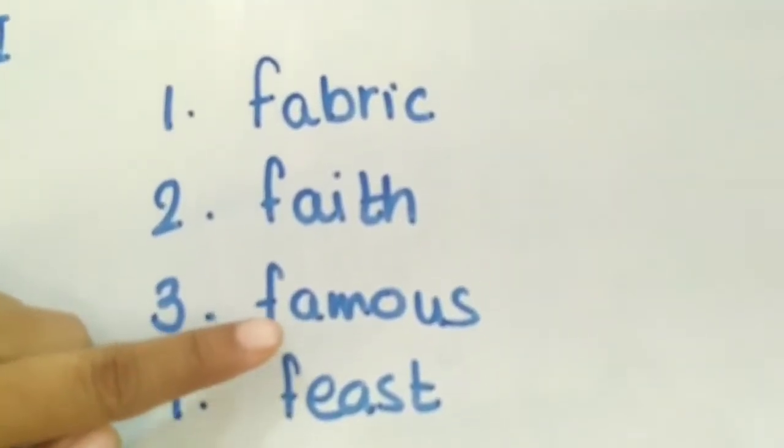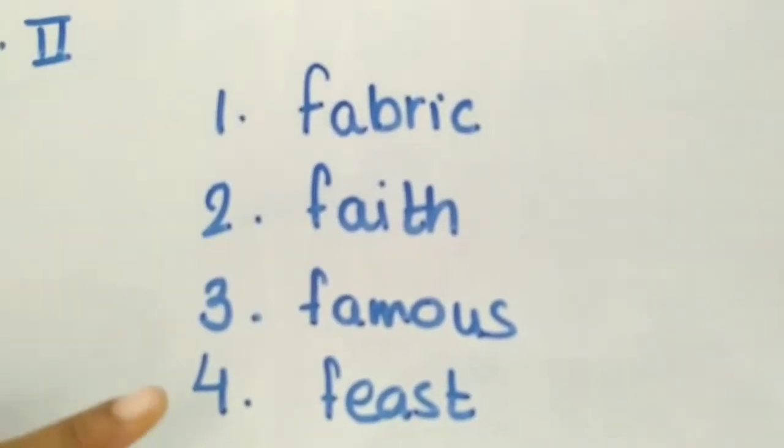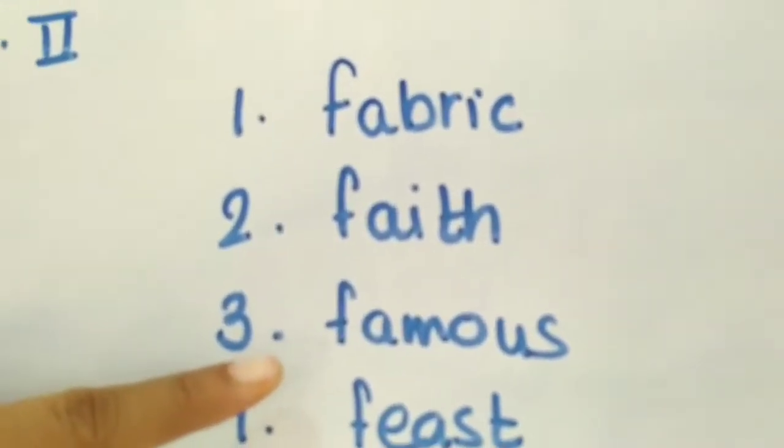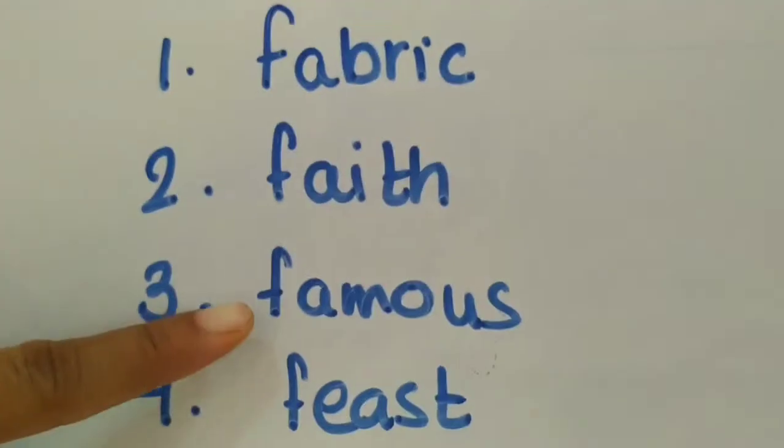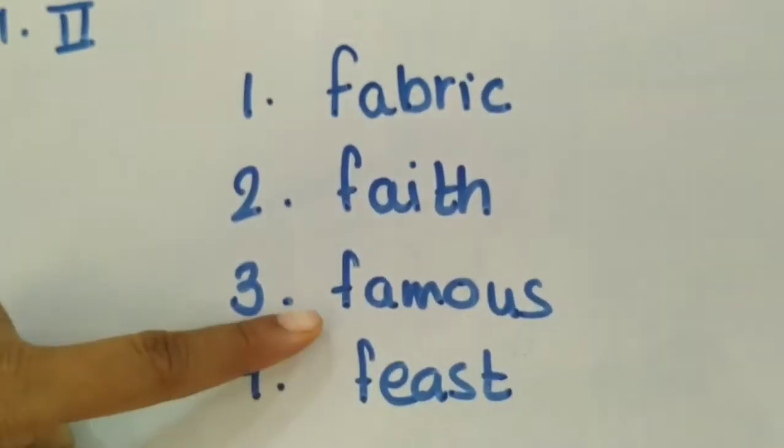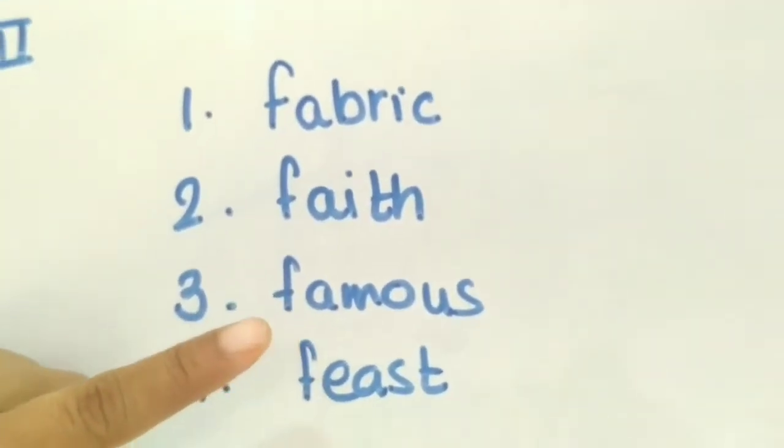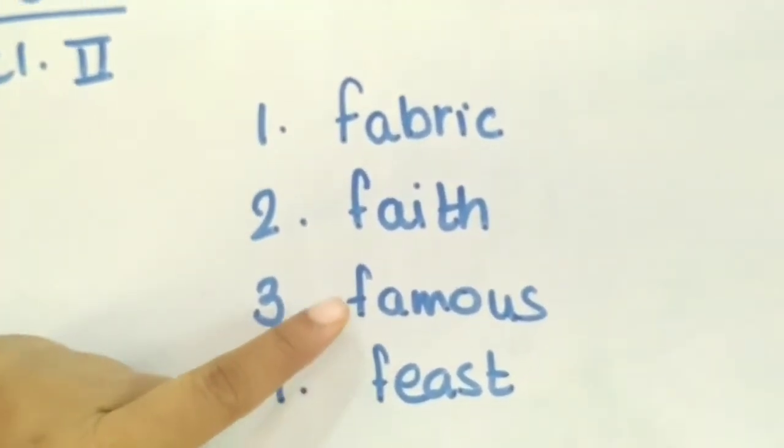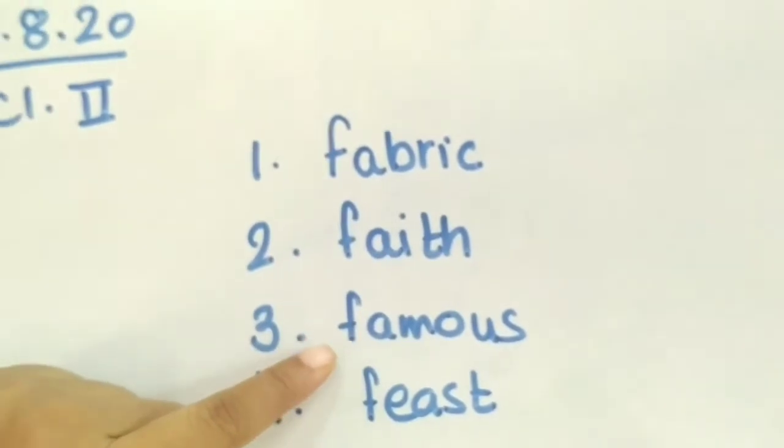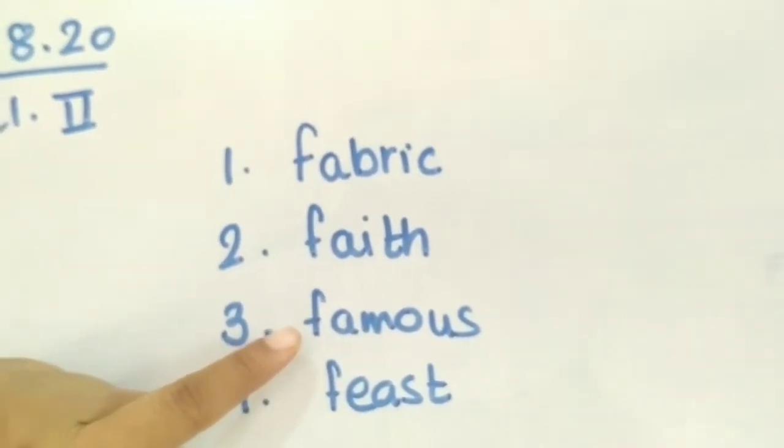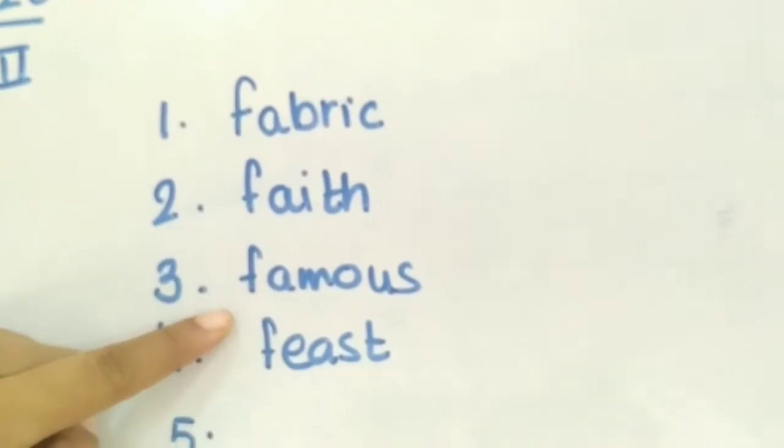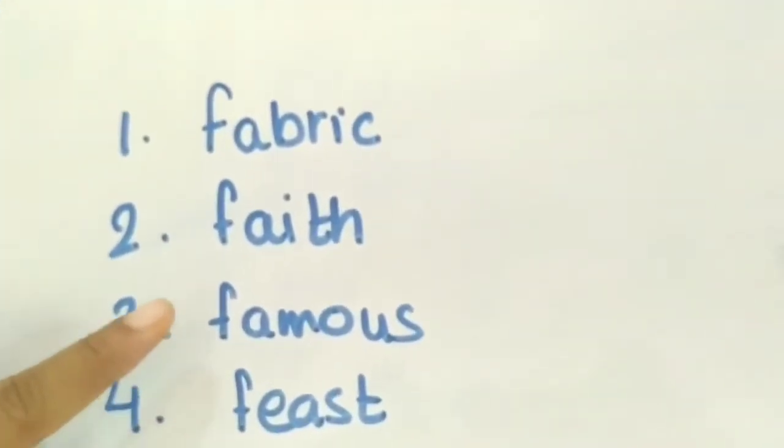F-A-M-O-U-S. So famous means what? Very well known. This is a famous place. Right? F-A-M-O-U-S. Famous means well known. The sentence can be this park is very famous or children's park is very famous.